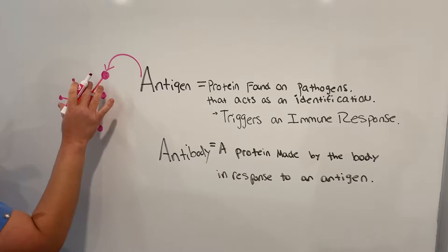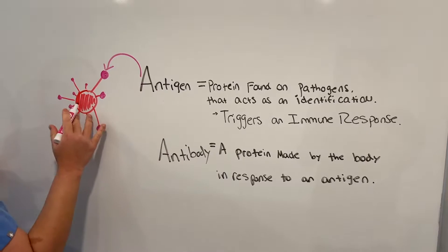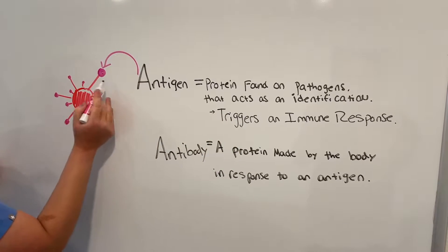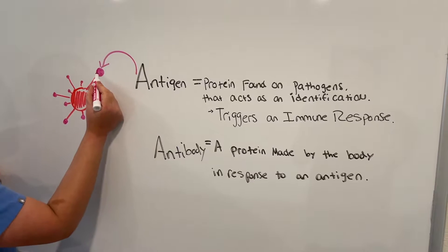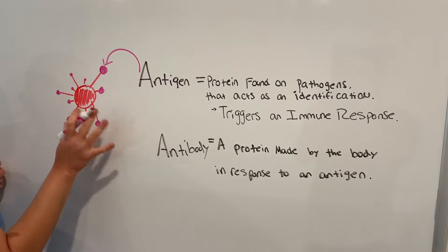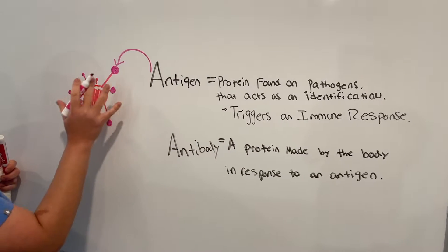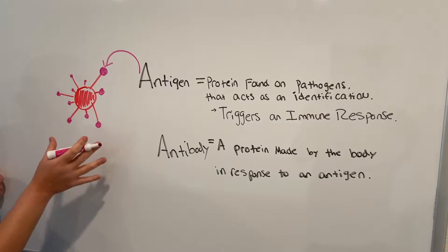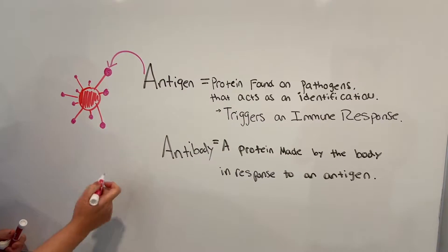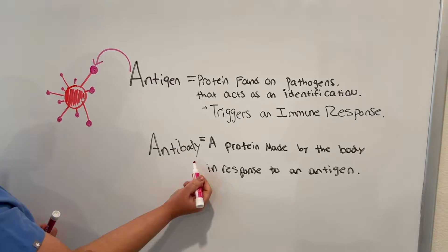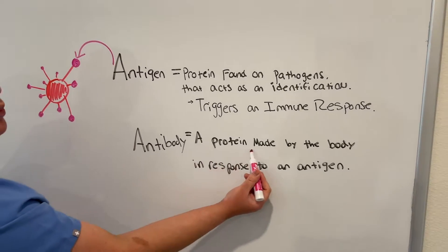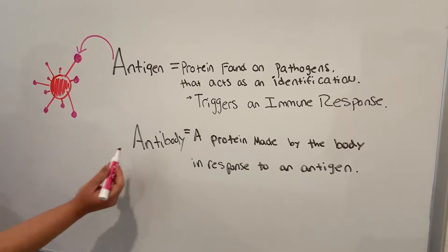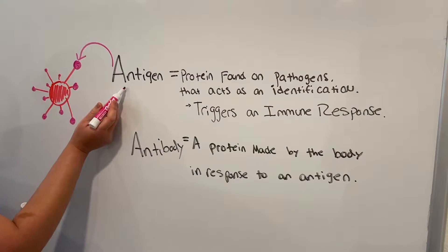When a pathogen enters the body, it triggers the immune response because the body says, hey, this antigen does not look familiar. It's not part of the body — this identification is not part of the body, so we need to attack it. And in comes the antibodies, a protein made by the body in response to antigens. So an antibody fights the antigens.